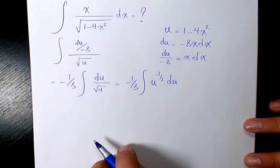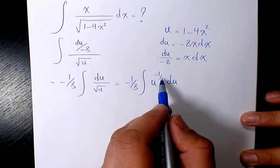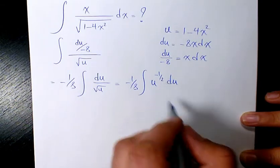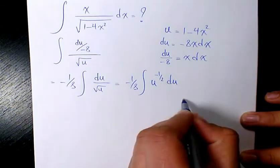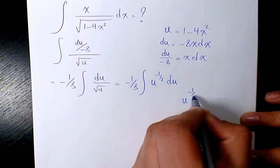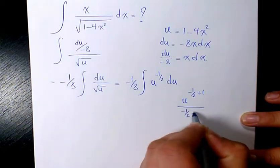Now, when we integrate it, we need to integrate this one. So we have u to the power of negative 1 over 2 plus 1 divided by negative 1 over 2 plus 1.